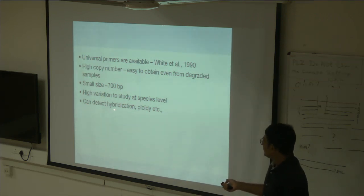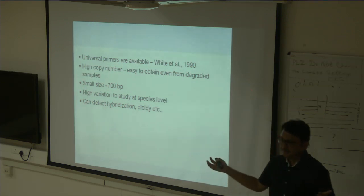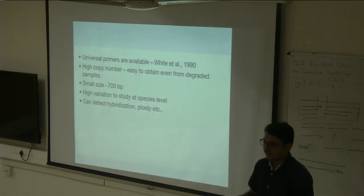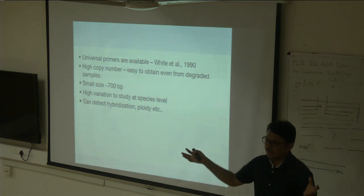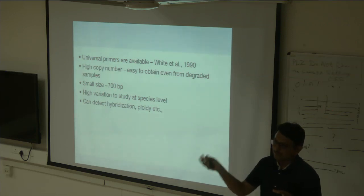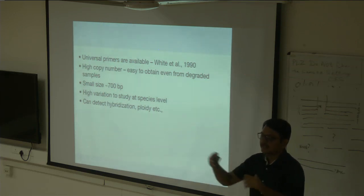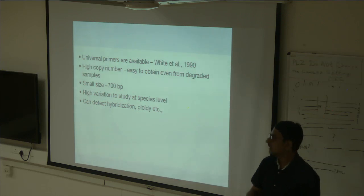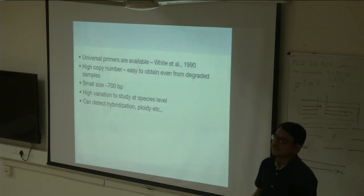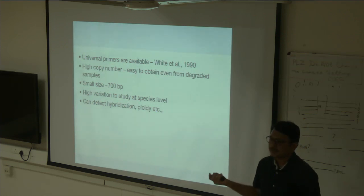Another advantage of ITS is that it can detect hybridizations. If a hybrid species is formed, two forms of the ITS would be present because the nuclear genome is inherited from two parents. Over time it converts to one form through concerted evolution, but a recent hybridization event can still be identified using nuclear markers like ITS.